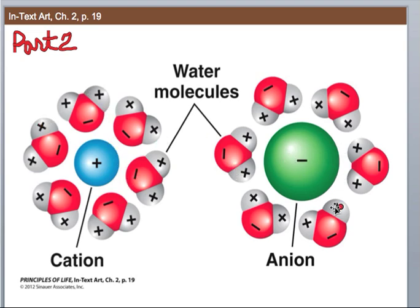Conversely, if you have an anion - in this case it looks like the chloride ion because it's so big - it can be surrounded by the positive ends of water molecules to protect that negative charge. This is called hydration, and this is why things dissolve.